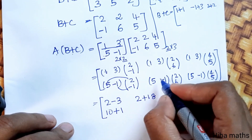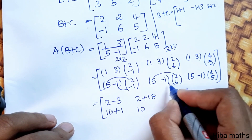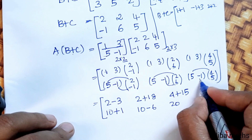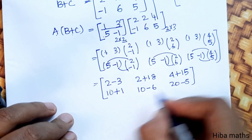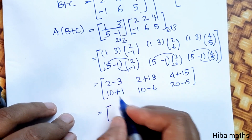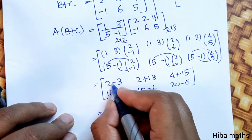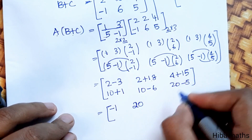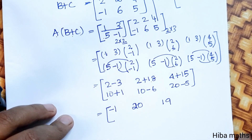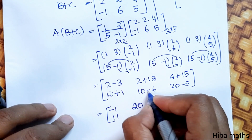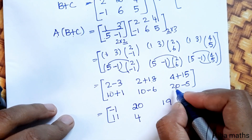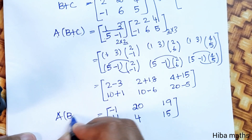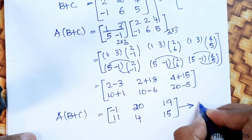Summing up: 2 minus 3 is -1; 2 plus 18 is 20; 4 plus 15 is 19; 10 plus 1 is 11; 10 minus 6 is 4; 20 minus 5 is 15. So A(B+C) equals the matrix [-1,20,19;11,4,15]. This is our first result.